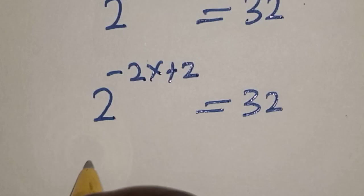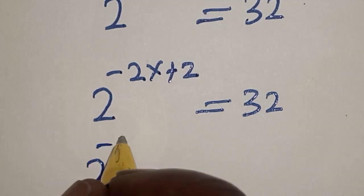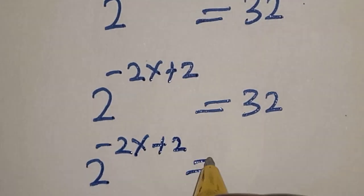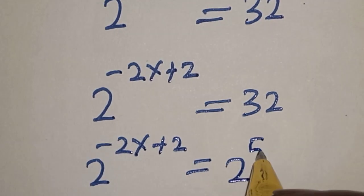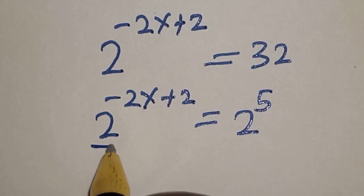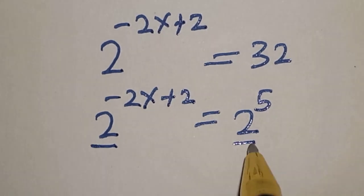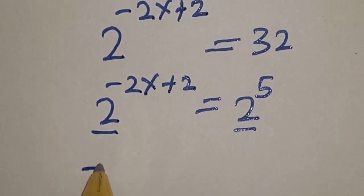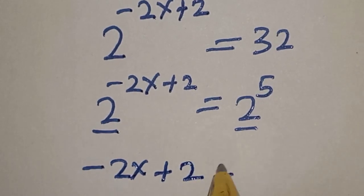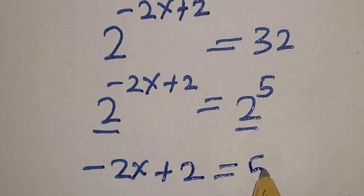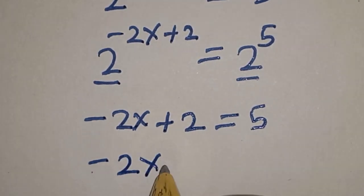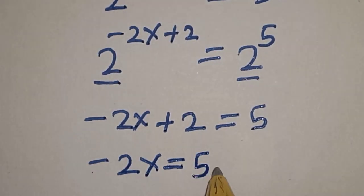Then 2 raised to power minus 2s plus 2 is equal to 2 raised to power 5, because 32 is 2 raised to power 5. They have the same base, so the bases cancel. We have minus 2s plus 2 is equal to 5.